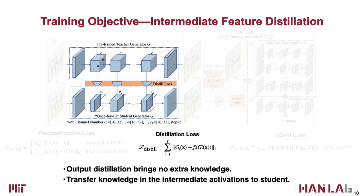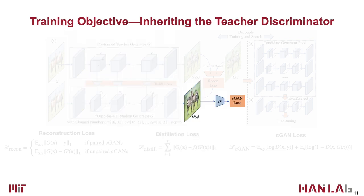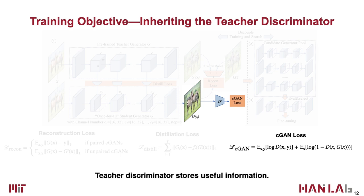Then, we adopt the same discriminator, use the pre-trained teacher's weights, and fine-tune the discriminator together with our compressed generator. Although we aim to compress the generator, a pre-trained discriminator stores useful knowledge of the current generator. We use it to guide the generator compression.